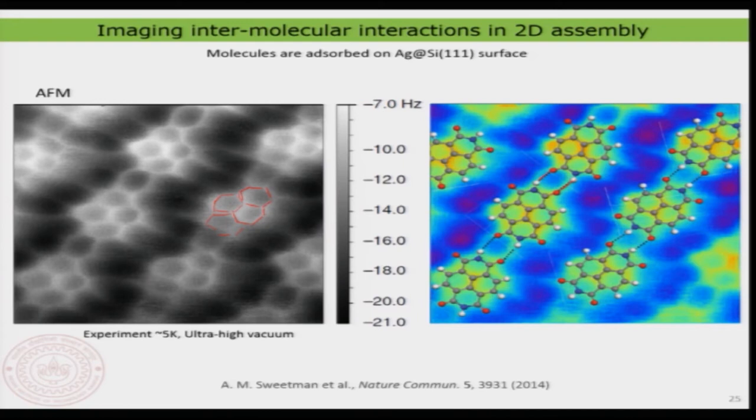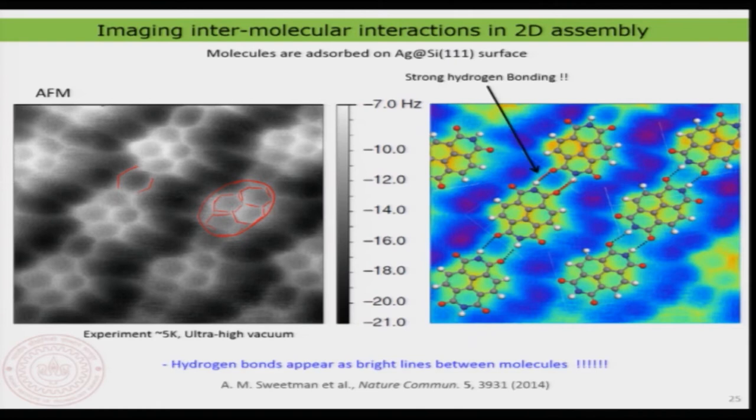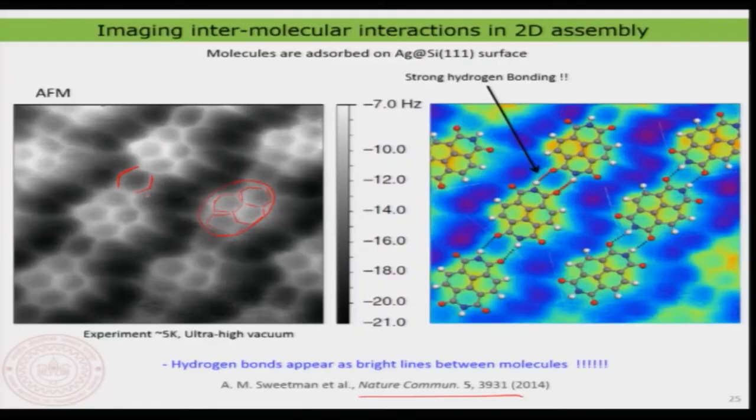Now something interesting: you are not just seeing the molecules, you can also see something in between them. That is nothing but the hydrogen bonding. For the first time ever, people could see hydrogen bonding directly. We know hydrogen bonding involves true charge delocalization between the participating atoms, and now you clearly see a certain electron density observed between the molecules, indicating hydrogen electron transfer during hydrogen bonding. This can be spatially resolved using atomic force microscopy.